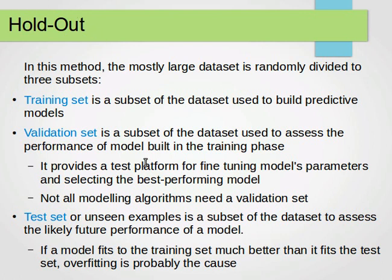That's the holdout method. We have a large dataset, we randomly split it into three subsets: one for training to build the model, one for validation to assess performance and fine-tune parameters, and one for testing to assess the likely future performance of the model.